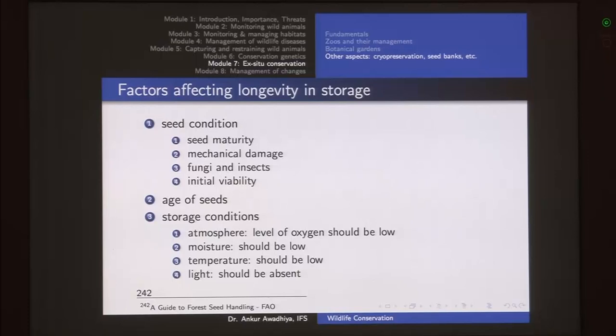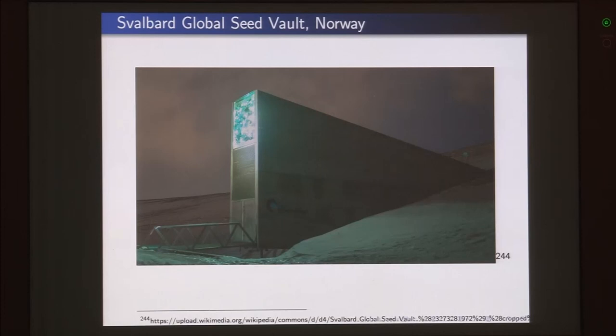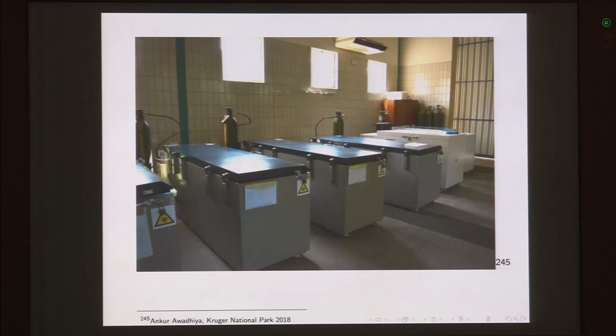Various principles of seed banking include: everything should be identifiable, maintenance of viability and propagability, genetic integrity, germplasm health, and physical security — including safety from earthquakes, floods, fires, global warming, and terrorism — as well as availability of germplasm and information to others. The Svalbard Global Seed Vault in Norway is a good example of a seed bank. Cryopreservation is low-temperature preservation and can also be done for animal samples such as sperm, ova, embryos, and tissues. An example from Kruger National Park shows chest freezers where various samples are kept for future use.